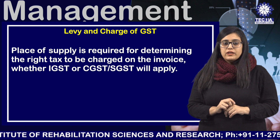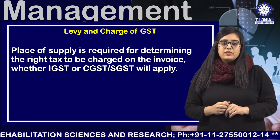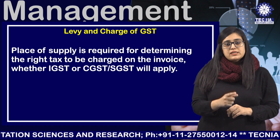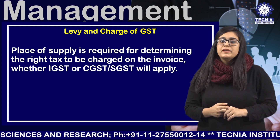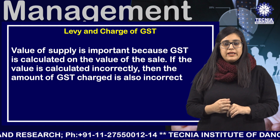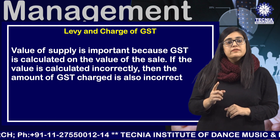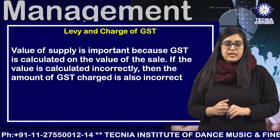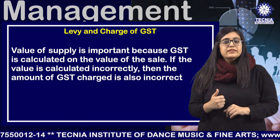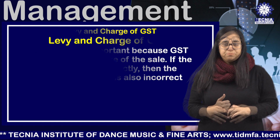Place of supply is required for determining the right tax to be charged on the invoice — whether IGST, CGST, or SGST will be applied. Then comes value of supply. It is important because GST is calculated on the value of sale. If the value is calculated incorrectly, then the amount of GST charged is also incorrect.